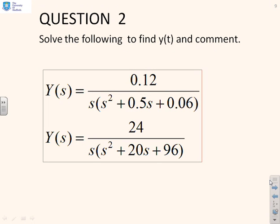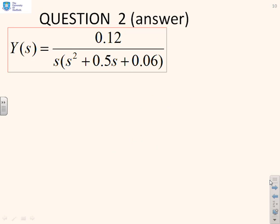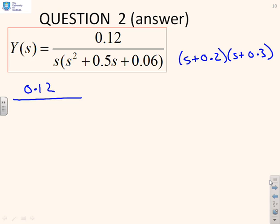Question 2: solve the following to find y(t) and comment. The only difference here is we've now used transfer functions rather than differential equation format. For the first one, I'm going to use partial fractions. You need to spot what the pole polynomial is — hopefully it's obvious you can write this as s(s + 0.2)(s + 0.3). So I can write 0.12 / [s(s² + 0.5s + 0.06)] in partial fraction form. I can see what the constant is by inspection: 0.12/0.06 = 2, so I write 2/s straight in.